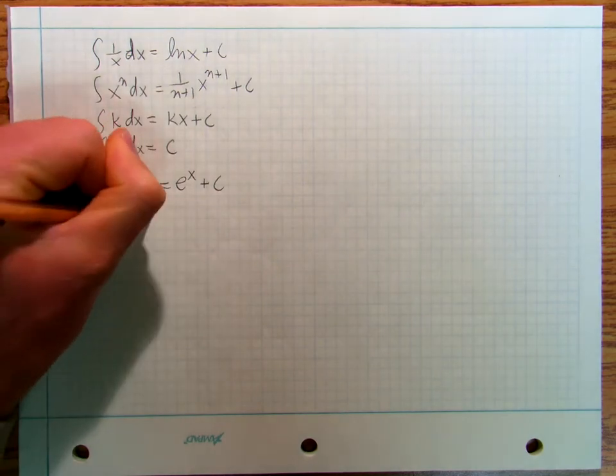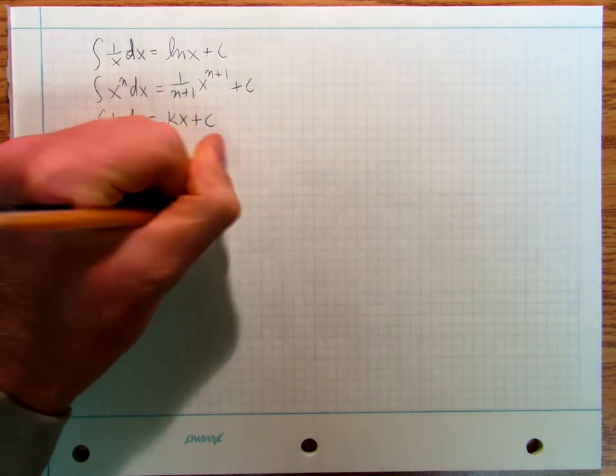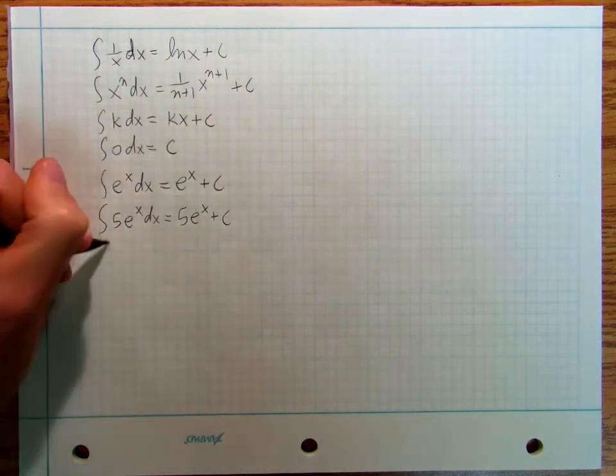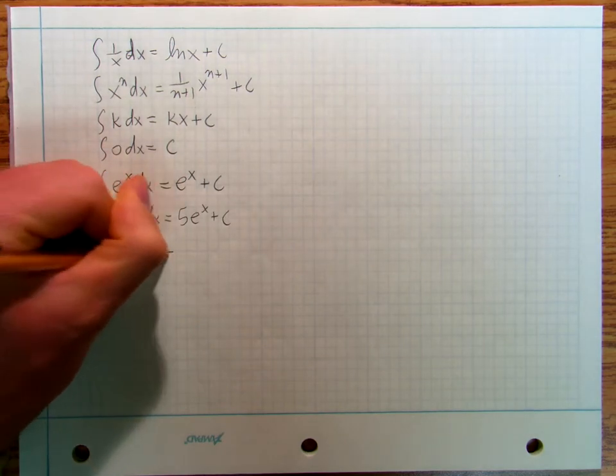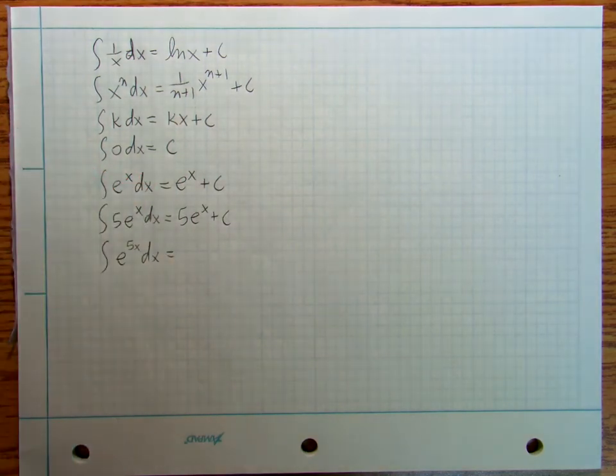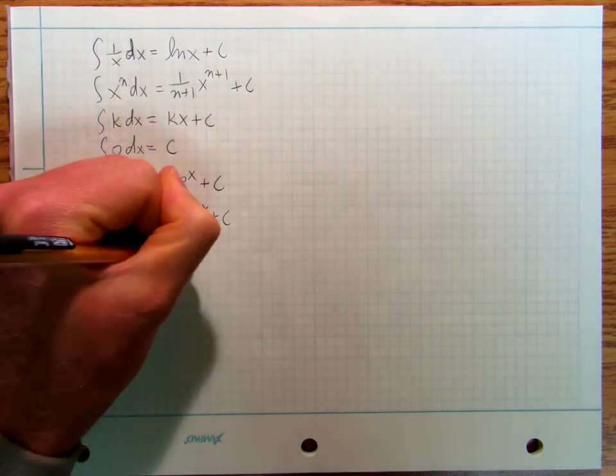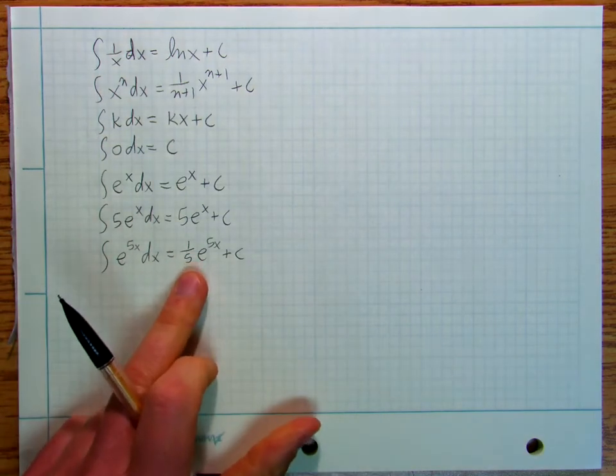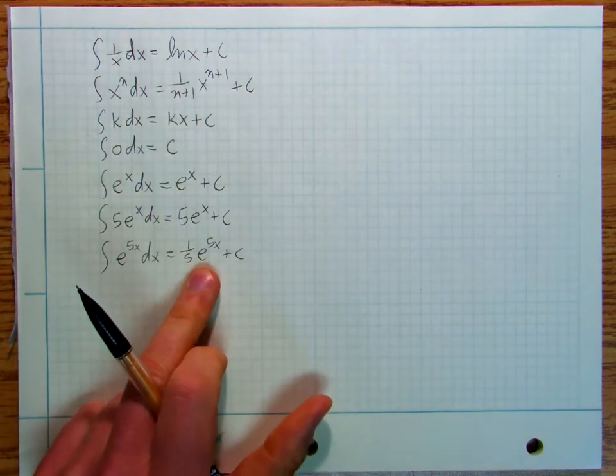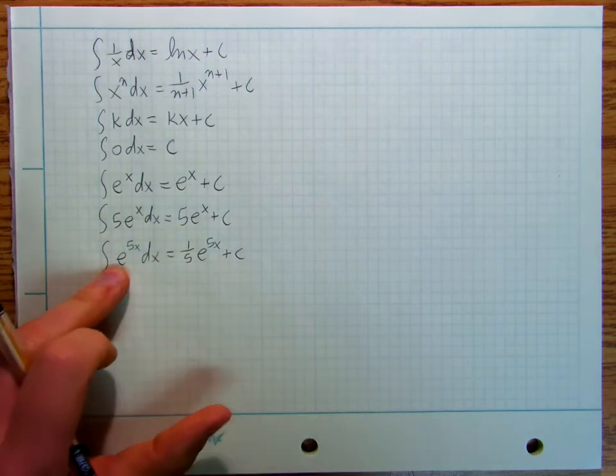The integral of 5 e to the x dx is equal to 5 e to the x plus c. The integral of e to the 5x dx, that's a chain rule reversed problem, so that's going to be 1 fifth e to the 5x plus c. I'll leave that for you guys to figure out. Use the chain rule to take the derivative of this and find out that it's that.